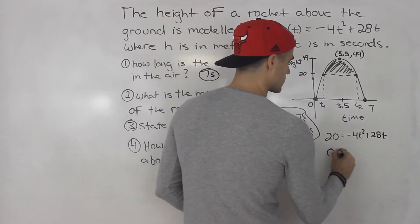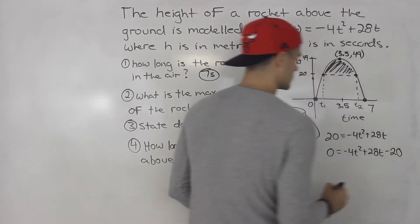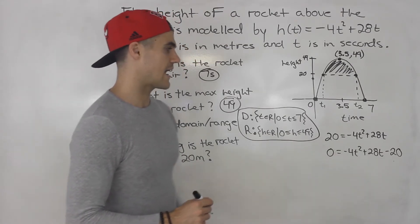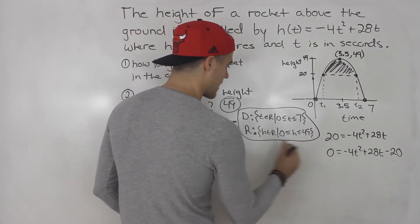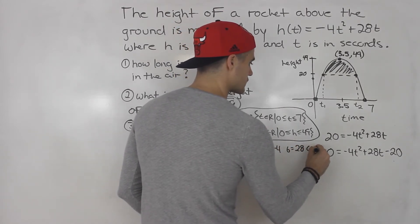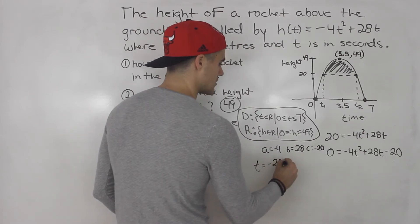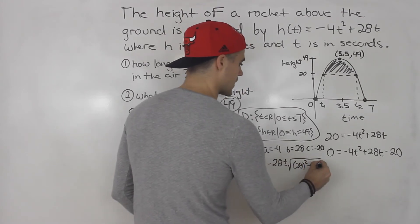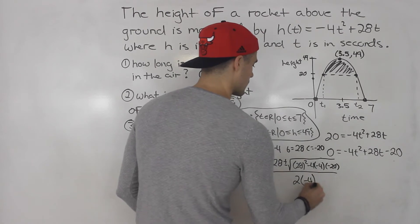And then bring the 20 over, so we'd have 0 = -4t² + 28t - 20. And then if you can, you can try to factor this. This actually won't factor smoothly if you try. So what you got to do is you got to throw this in the quadratic formula. So we know the a value is -4, the b value is 28, and then the c value is -20. So basically, t would be -b, so -28, plus or minus b², so 28², minus 4 times the a value of -4 times the c value of -20, all over 2 times -4.